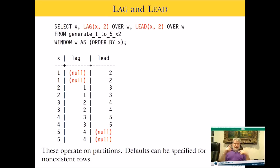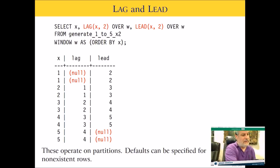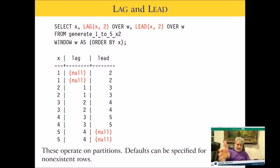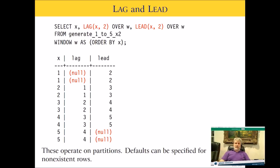Here's an example of LAG and LEAD together. LAG with offset 2 gives the value two rows back, while LEAD gives the value two rows forward. The right-hand column shows that the first row's LEAD value is 2 (two rows ahead). Once you reach the end, there are no rows ahead so it returns NULL. You can also specify default values for missing rows.